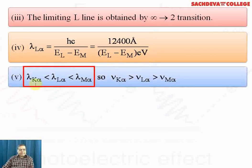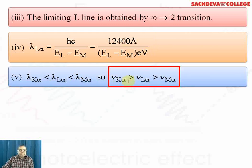Wavelength of K alpha line is less than wavelength of L alpha line, which is less than wavelength of M alpha line. So frequency of K alpha is greater than frequency of L alpha, which is greater than frequency of M alpha. Wavelength and frequency are inversely proportional because energy is given by E = hν = hc/λ. Where wavelength decreases, frequency increases.